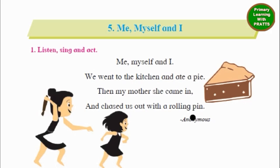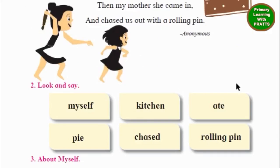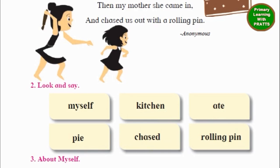So it is called a rolling pin. And let's see what are the words here: myself, kitchen, ate, pie, chased, rolling pin. This lesson exercise will also be there, and you can find it in our video playlist for lesson exercises.